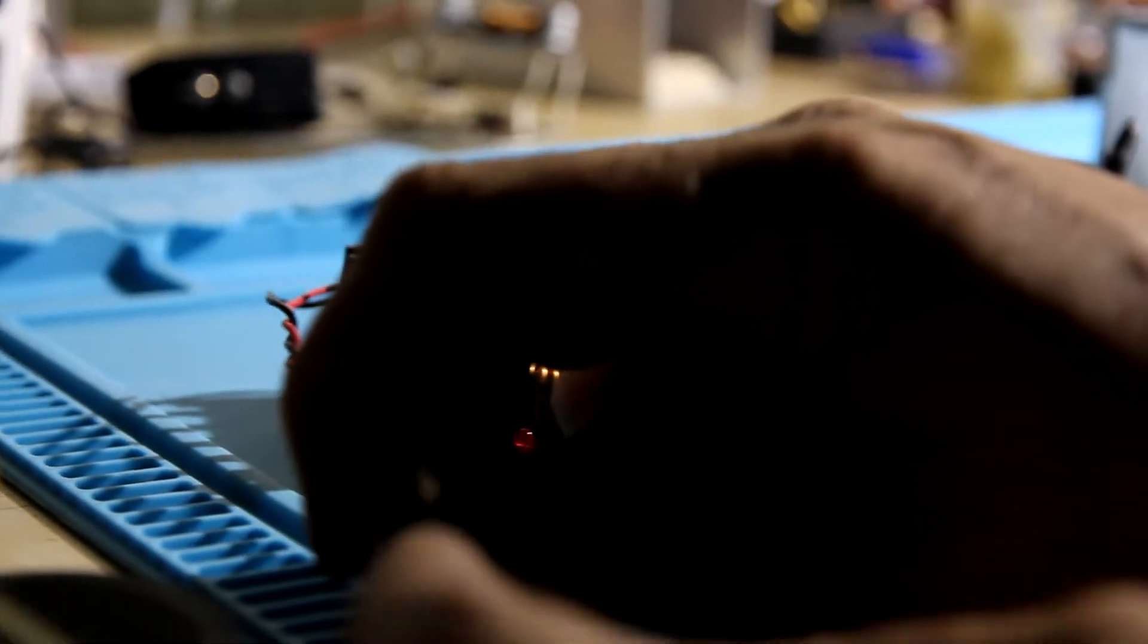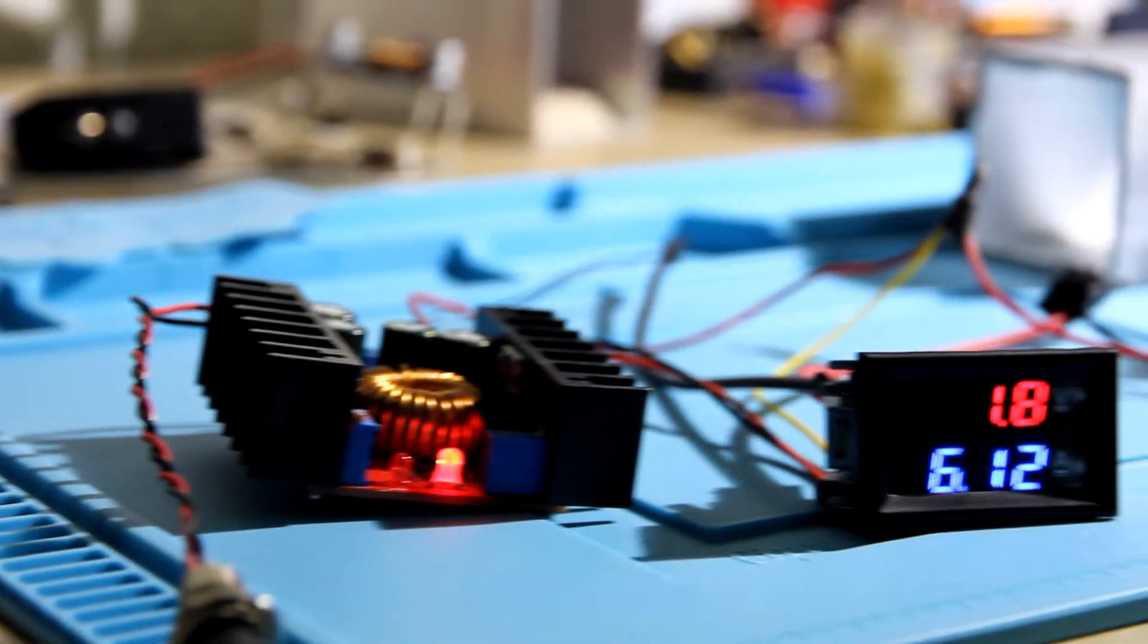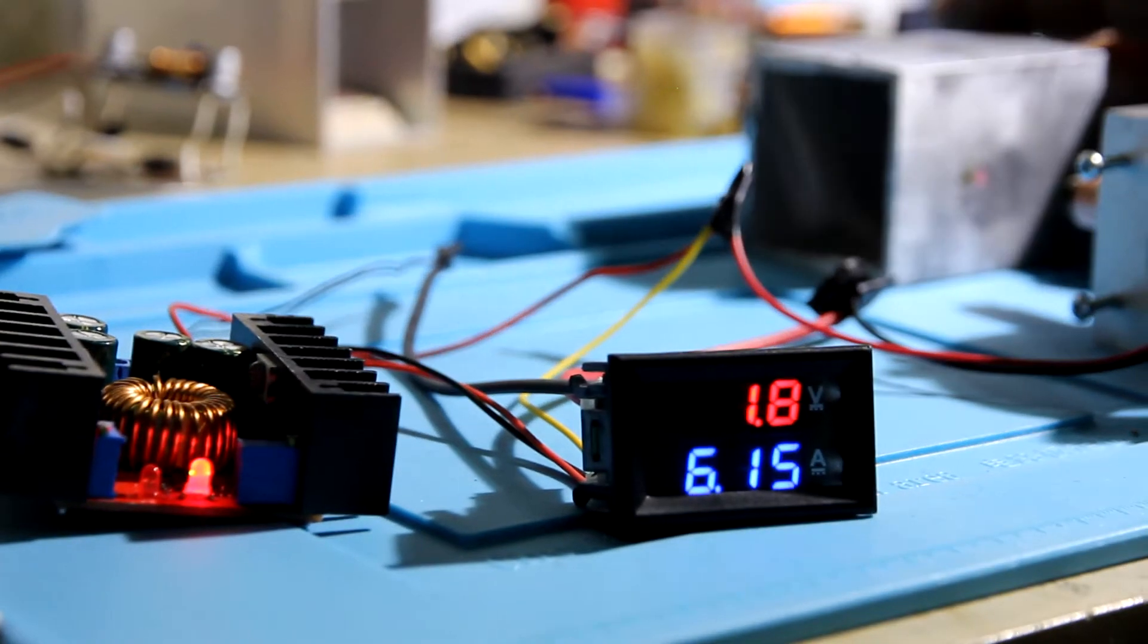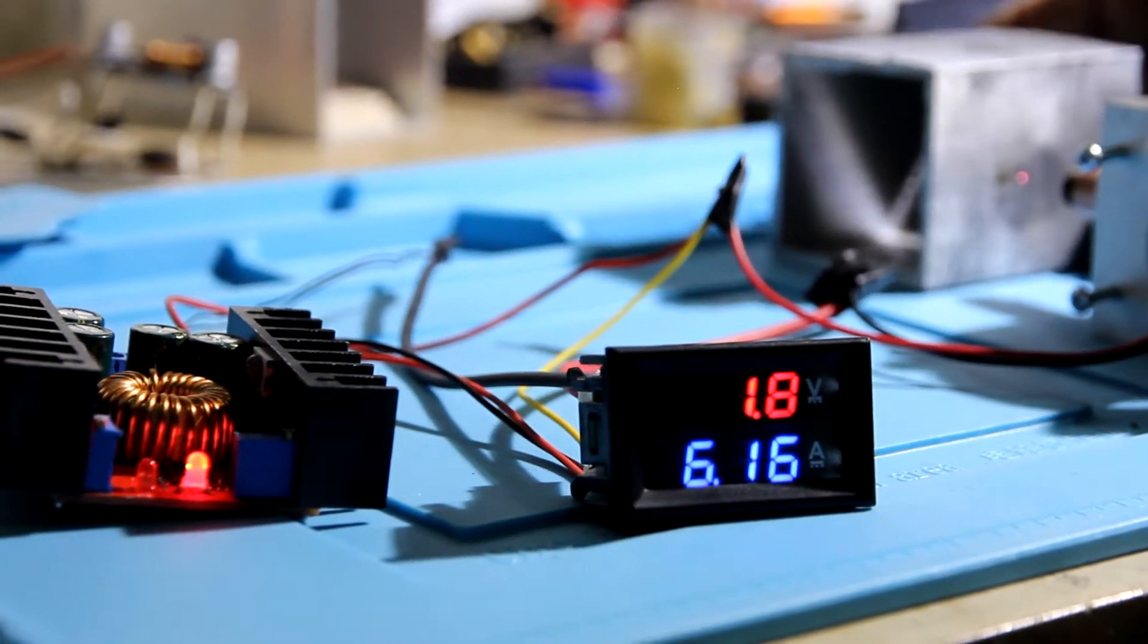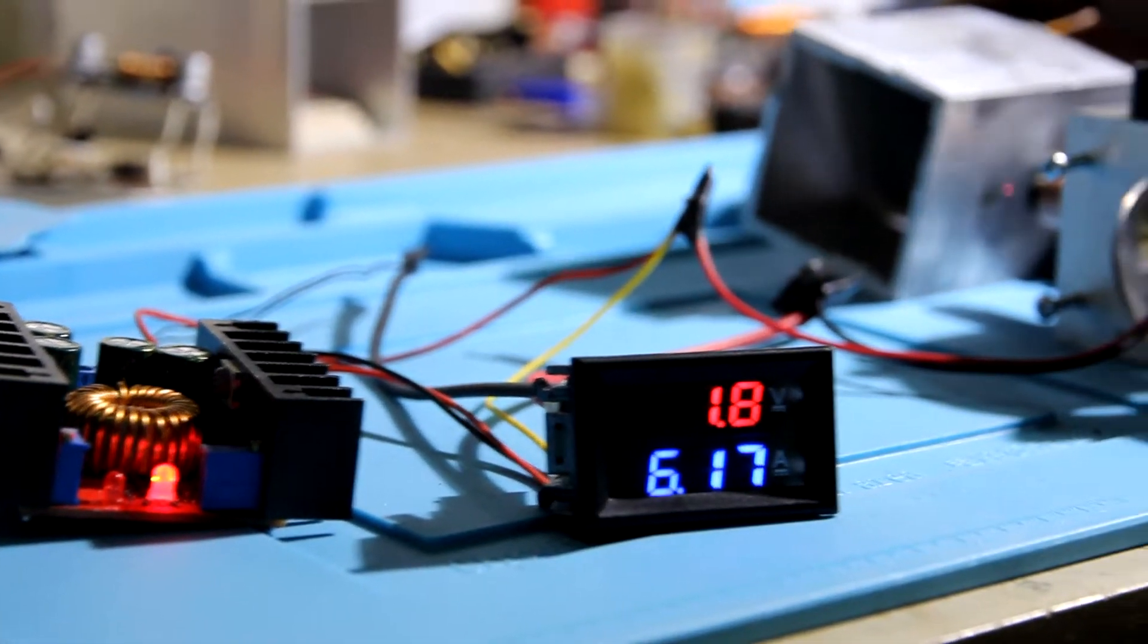And this is a DC-DC converter that we are going to use. So right now you see that 1.8 volts and almost 6.2 amps.